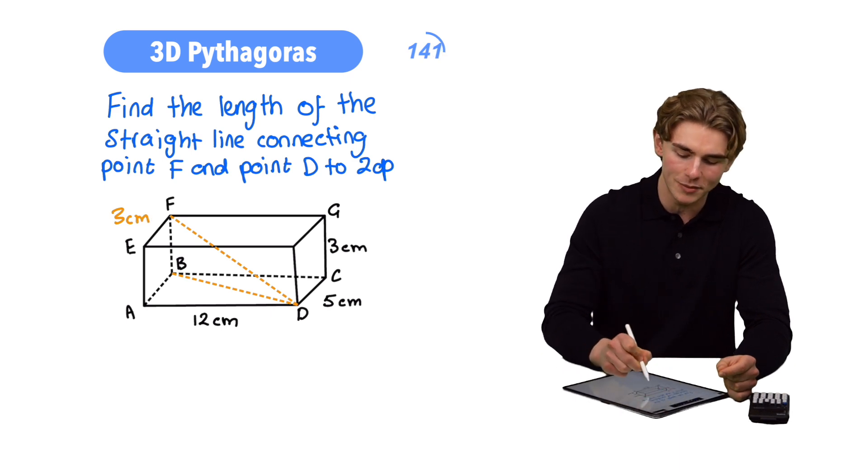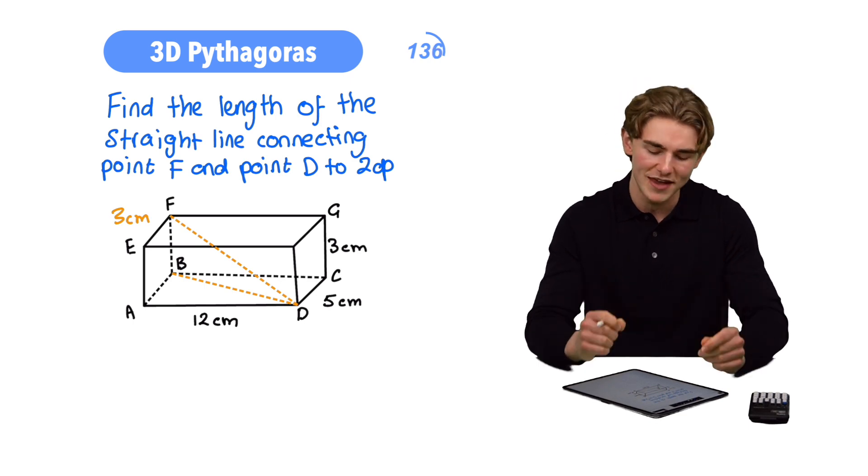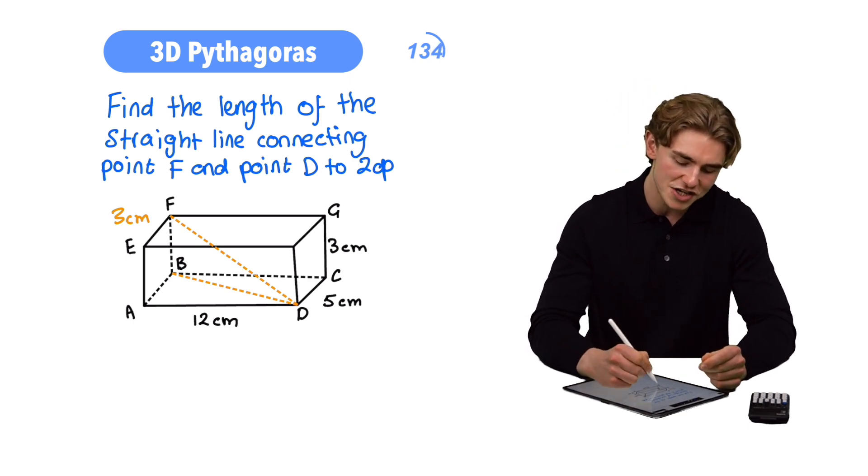Now, finding BD, that one's going to be a little bit more challenging. We're actually going to have to use Pythagoras' theorem in a different situation. Let me explain. Down here, we can see that we actually have another right-angled triangle. It's going to be the right-angled triangle which connects point A,